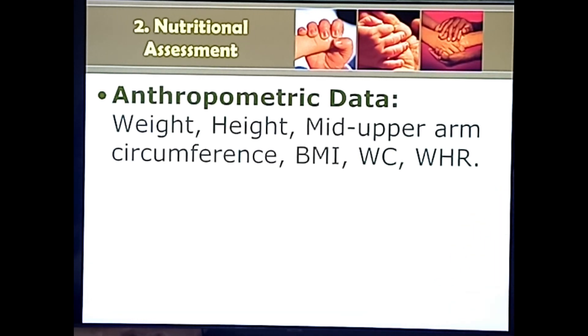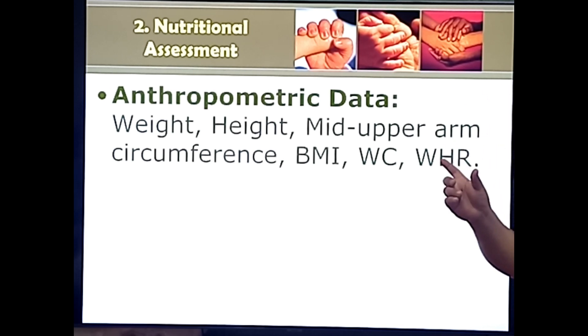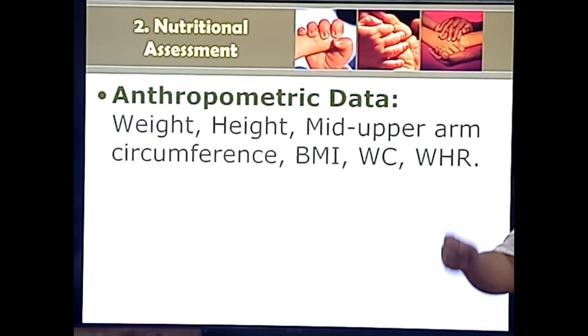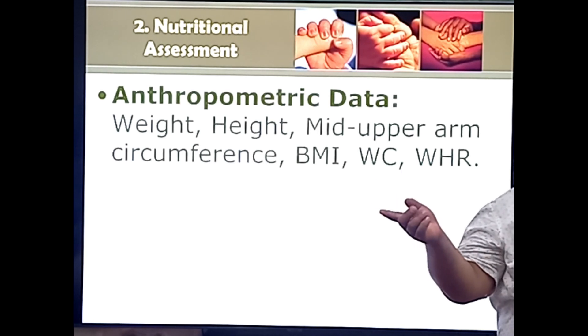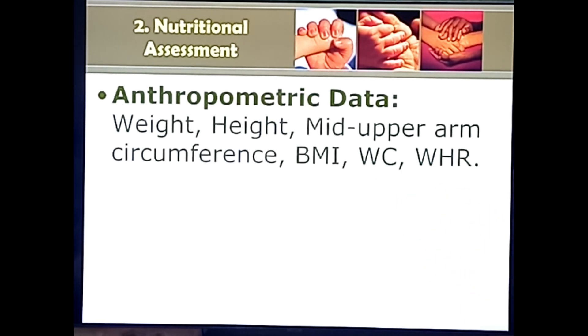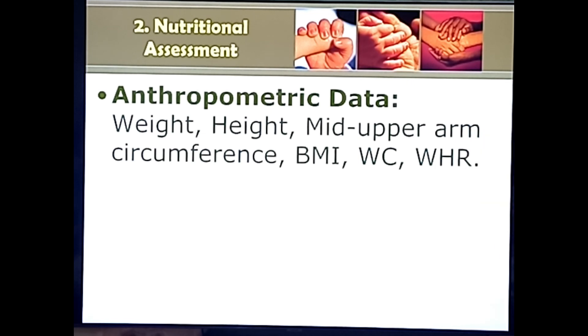One stick of cigarette contains 7,000 chemicals, 70 of which are carcinogenic — meaning they can cause cancer. One such chemical is hydrocarbons, which are present in anything that is burned, including cigarettes.